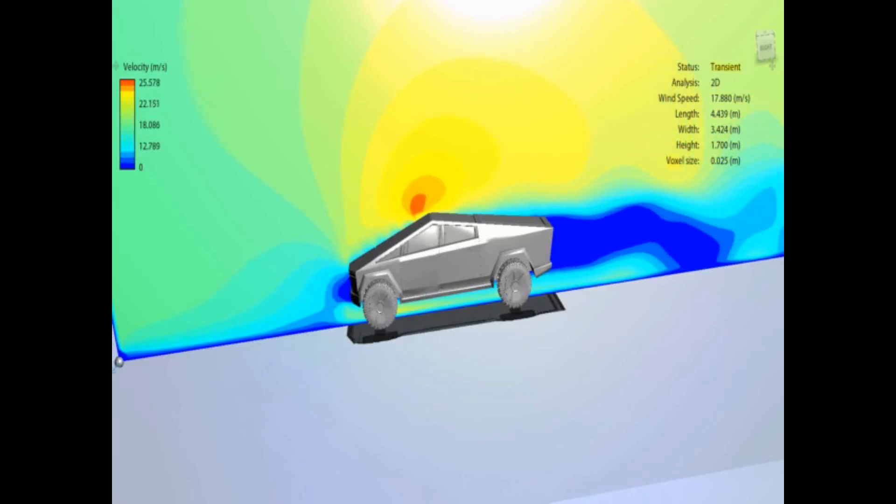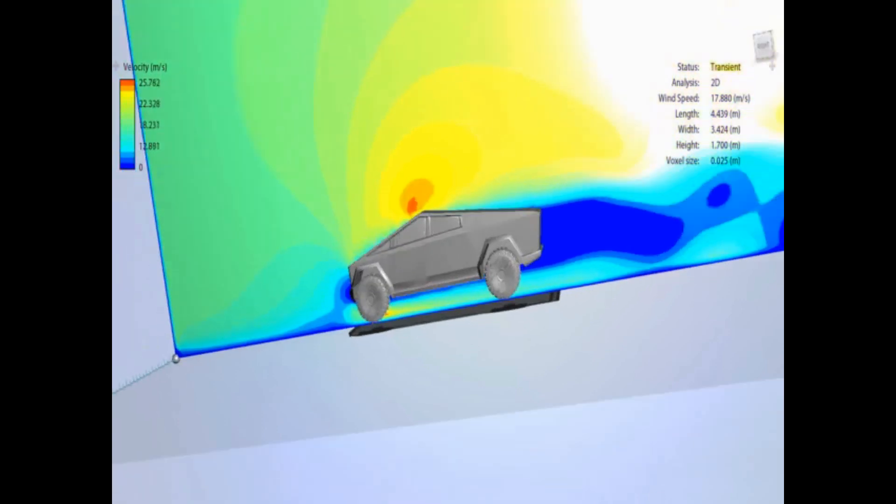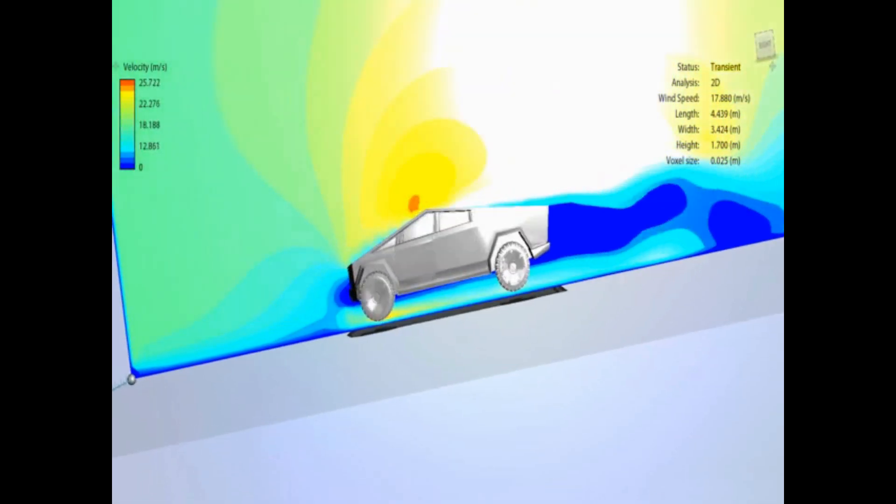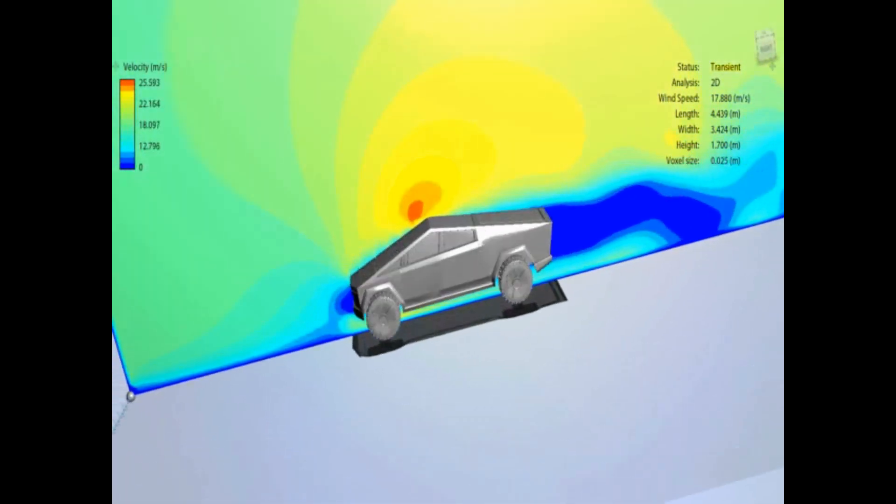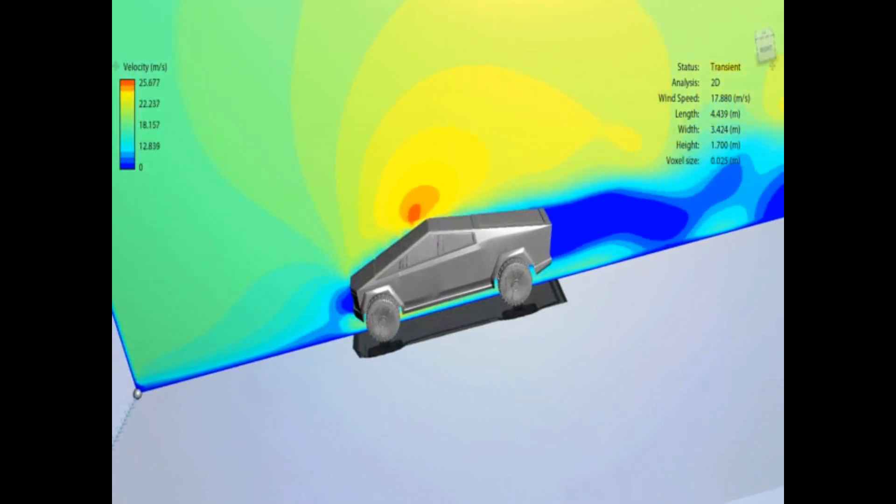So we're using CFD software, that's Computational Fluid Dynamics, and here you can see we're at 17.8 meters per second, which is 40 miles an hour, showing the velocity of the air going over the car.